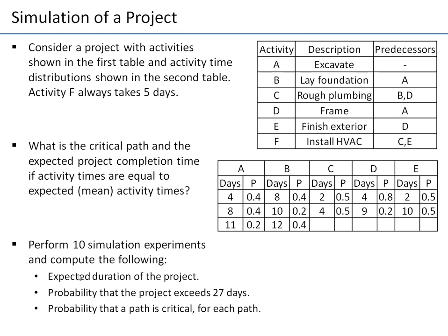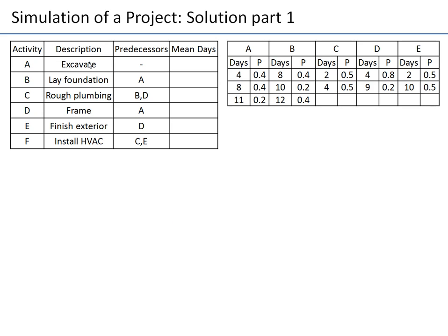The performance measures include expected duration, probability of exceeding 27 days, and probability that each path is critical. First, we use the Critical Path Method for expected or mean durations. For activity A, we compute the expected value: the expected time is calculated from its probability distribution.